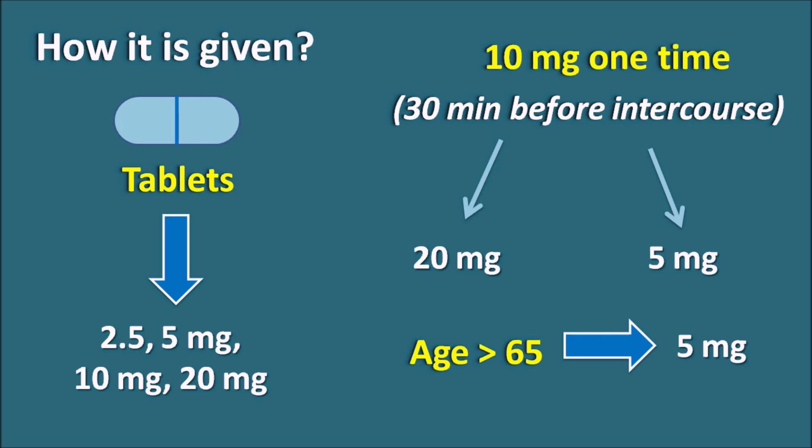In summary, Vardenafil is a phosphodiesterase type 5 inhibitor that acts on the corpus cavernosum to increase cyclic GMP levels, producing relaxation of smooth muscle and arterioles resulting in erection of the erectile tissue. It is used in the treatment of erectile dysfunction. It produces vasodilatory side effects such as headache, flushing, and dizziness, and is strictly contraindicated with organic nitrates due to risk of severe hypotension. It should be used carefully with alpha blockers, and in patients with hepatic impairment or QT interval prolongation.